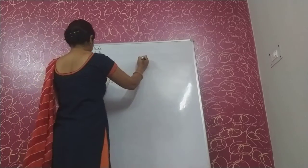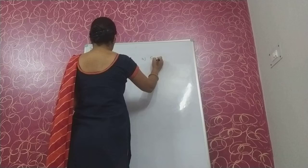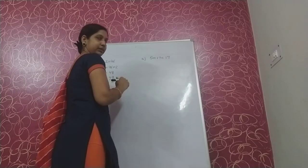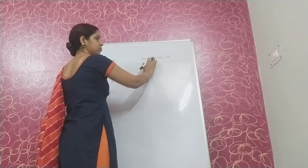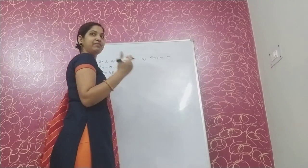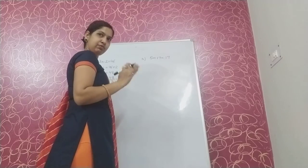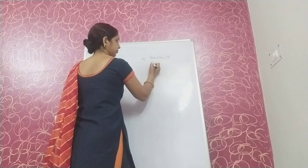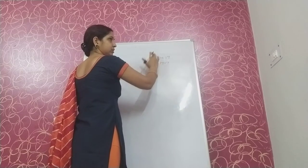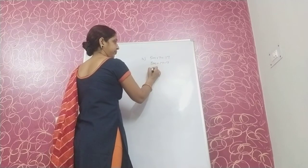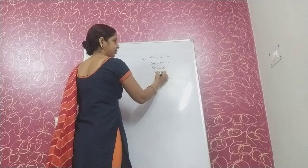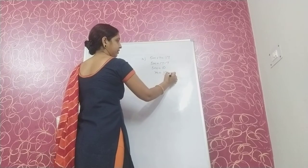Next, 5m plus 7 is equal to 17. Again, we have two numbers: 5 is multiplying m, and 7 is being added. First we transpose 7 to the other side, then we transpose 5. If we transpose 5 first, it would be wrong. So 5m is equal to 17 minus 7, which is 10. So the value of m is 10 upon 5, that is 2.